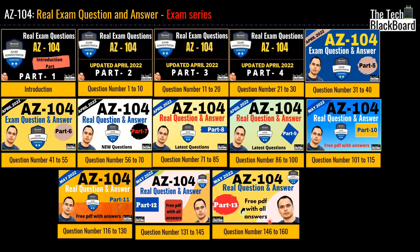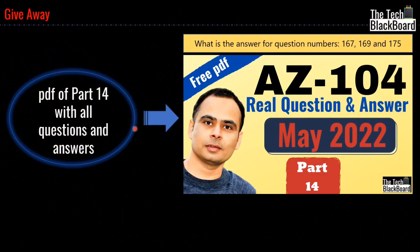As a bonus you can get PDF versions of all these 13 parts. For that you have to answer a few simple questions asked in the respective parts, and you will find all the answers in those respective videos. For the PDF version of part 14, you have to tell me the correct answers for question number 167, 169 and 175.